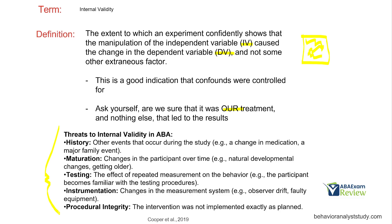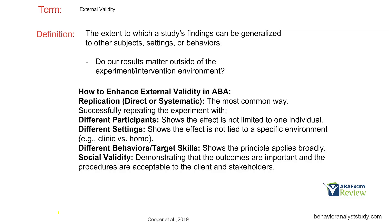Internal validity is everything inside of our experimental environment. External validity is going to be everything outside of that environment — all the other generalization settings. It's the extent to which a study's findings can be generalized to other subjects, settings, or behaviors. Do our results even matter outside of the intervention experiment? If I teach something to someone in a clinical setting but they can't do it in school, at home, at Walmart, or Target — does it matter?